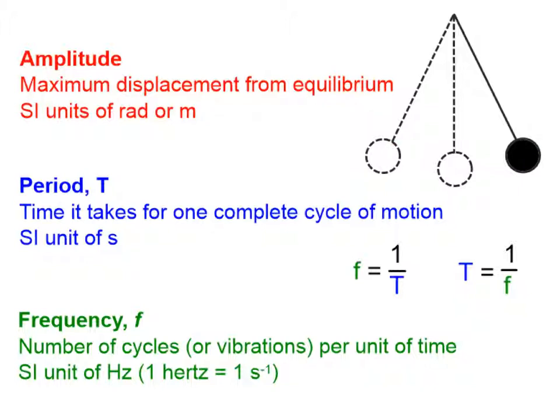The SI units of amplitude are either radians or meters. The period of this pendulum is represented with a capital T and it's the time that it takes for the bob in this case to complete one cycle of motion. So the period would be the time it takes to go from here back to here again.